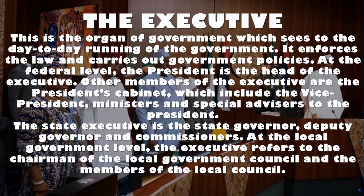At the federal level, the President is the head. Other members of the executive are the President's cabinet, which includes the Vice President, ministers, and special advisors. In Nigeria, the members of the executive are the President, Mohammed Buhari, and the Vice President, Osinbajo. At the state level, the executive is the state Governor, Deputy Governor, and commissioners. As we have in Edo State, Godwin Obaseki is the state executive, along with Shaibu and commissioners.